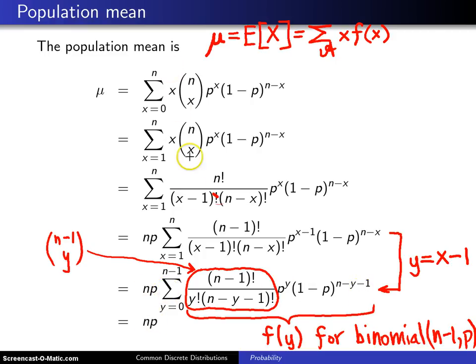So even though this might not be something you could put together yourself, mainly this step here with pulling out the np, it still works and we have that the population mean of a binomial distribution is np.